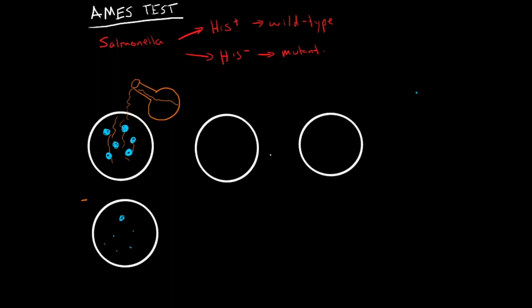Just to see the chance of there being a spontaneous mutation that allows them to grow, right? Because bacteria divide really quick and the chances of them getting mutation are a little bit higher, so maybe you would have one or two colonies that grew here.